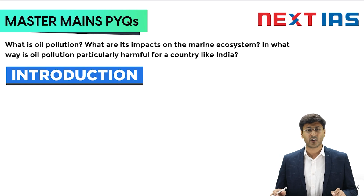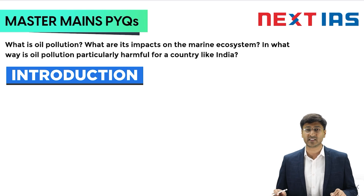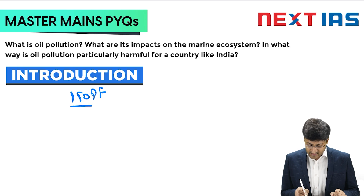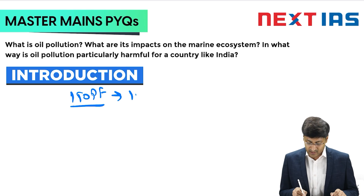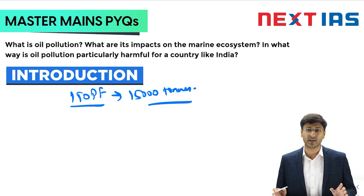Oil pollution generally refers to the introduction of crude oil or refined petroleum products into the environment, leading to the contamination of air, soil, or water. It can happen through various means like oil spills from tanker accidents, illegal dumping, offshore drilling, pipeline leakage, or other human activities. According to ITOPF data, in 2022 the volume of oil lost to the environment globally was 15,000 tons.